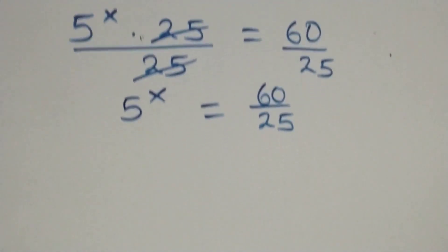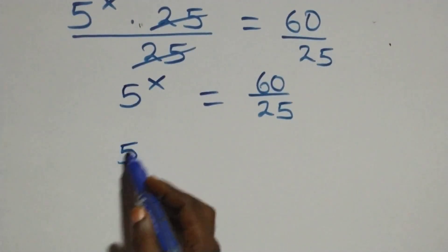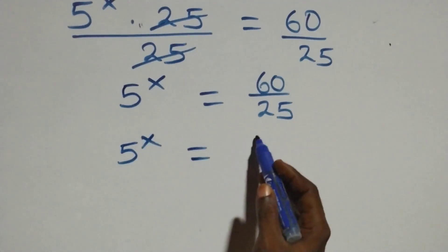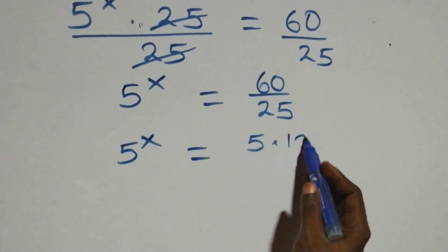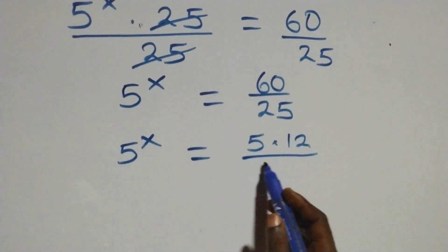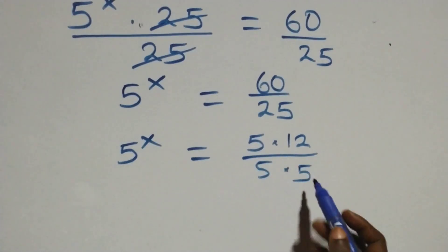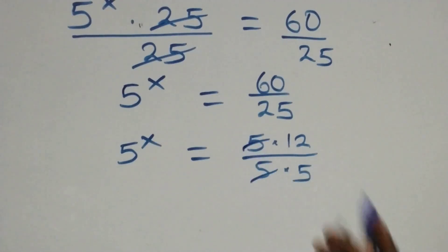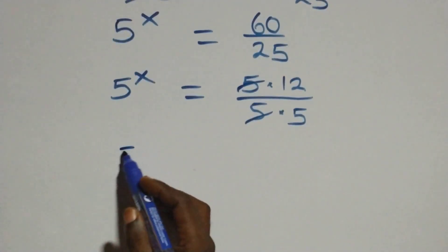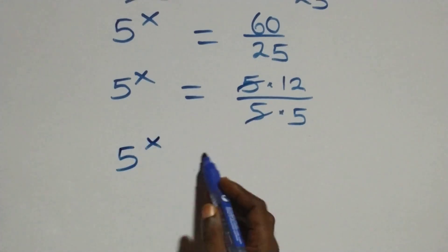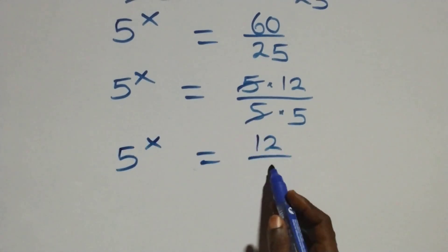We can write this as 5 raised to power x equals to 5 times 12 over 5 times 5. The 5s cancel each other, and we are left with 5 raised to power x equals to 12 over 5.